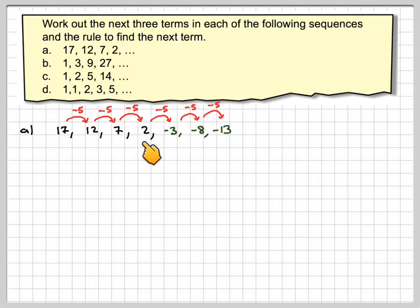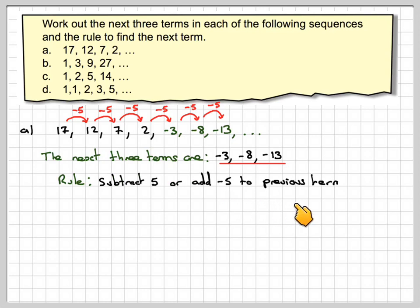So, this is what's known as a linear sequence. It's changing by the same, what's known as common difference each time. We're going to look at these in more detail later. The three dots means it carries on. The next three terms are going to be the ones in green, minus 3, minus 8, minus 13. And the rule is going to be subtract 5 or add minus 5 to the previous term.